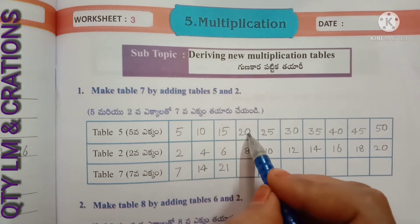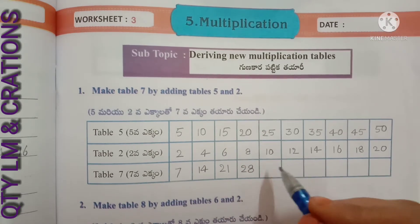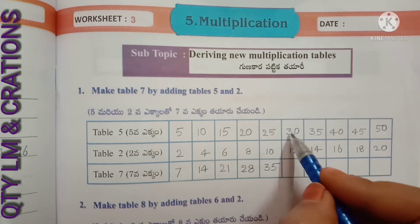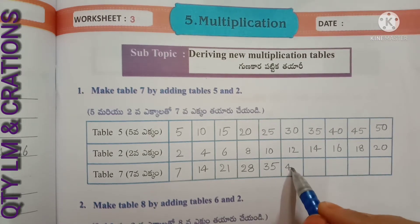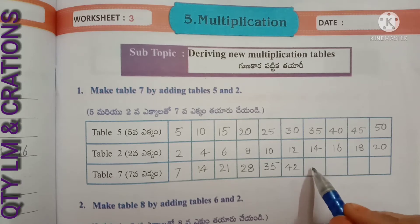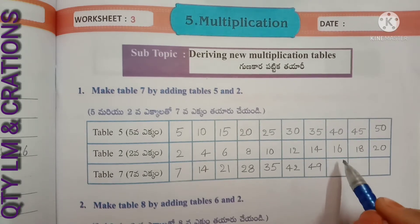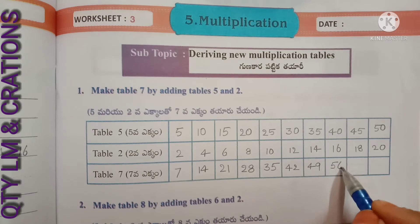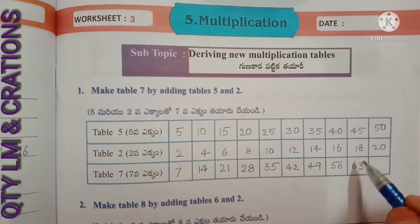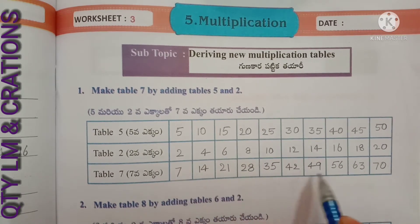Continuing: five sevens plus two sevens gives forty-nine. Five eights plus two eights gives fifty-six. Five nines plus two nines gives sixty-three. Five tens plus two tens gives seventy. So we have made the 7th table.